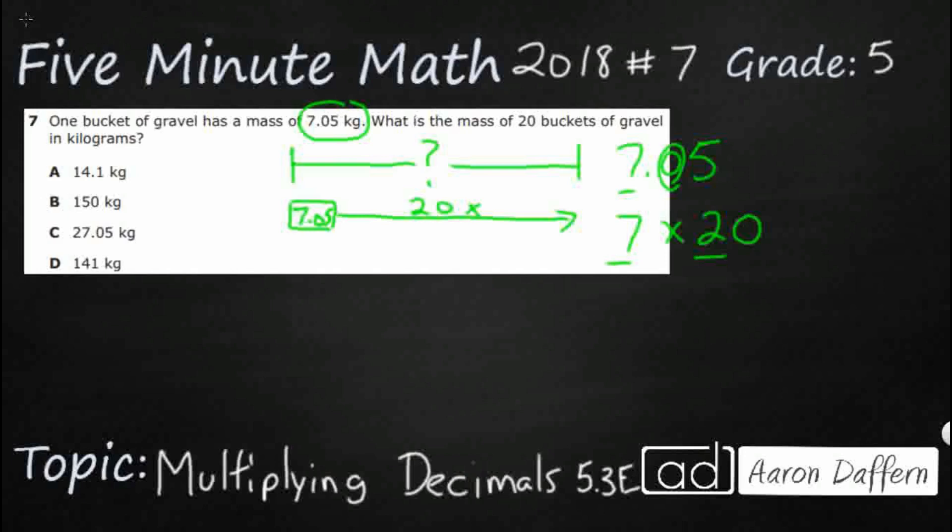We can multiply by our multiples of 10, 100, or 1,000 trick. When we see that 20 has a zero at the end, we're just going to multiply the non-zero numbers. Seven times two—that's going to make 14. Then we add the zero back in. That's the trick we learned about multiplying by multiples of 10, 100, or 1,000.